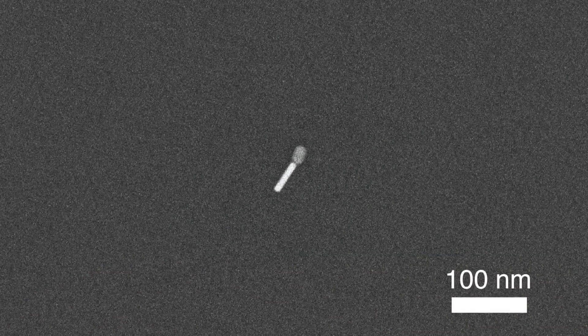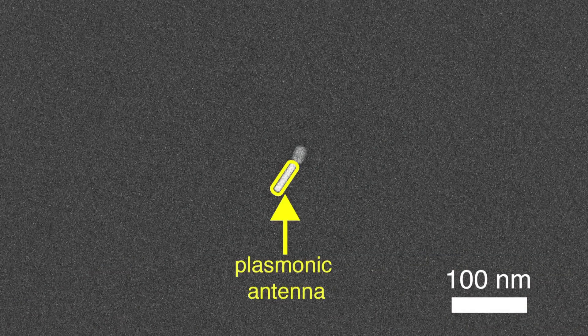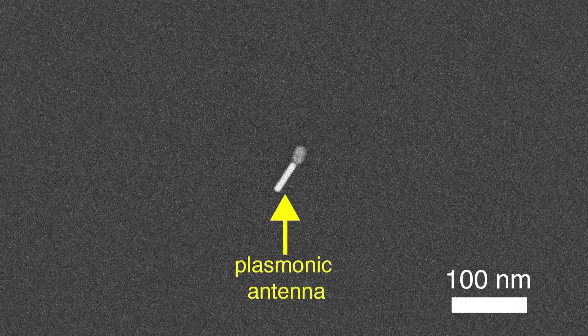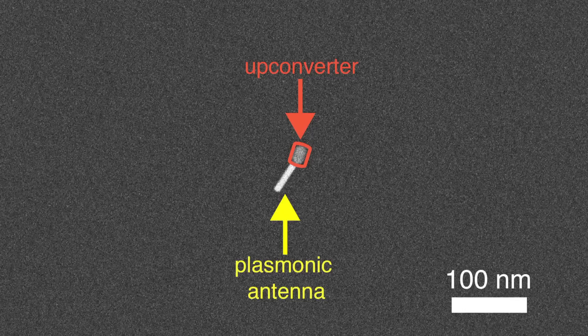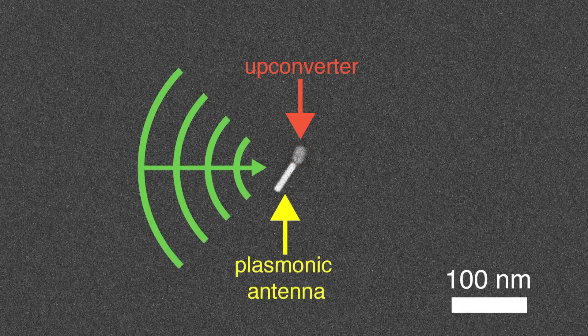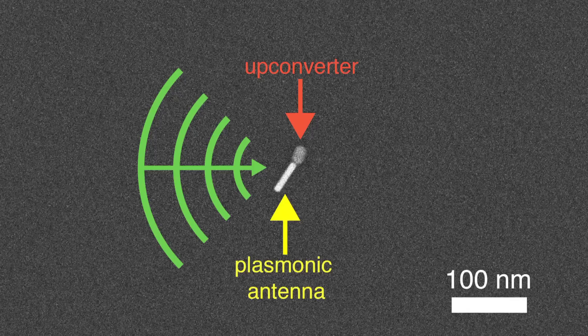Let's take a closer look. Here is a plasmonic nanorod. It can be used as a tiny antenna for light. When you put it near an upconverting nanoparticle, the nanorod concentrates the light hitting the upconverter. This increases the chance that upconversion will occur.